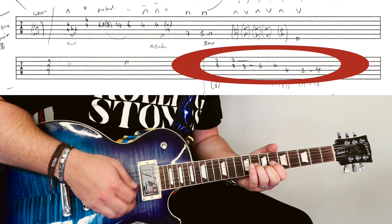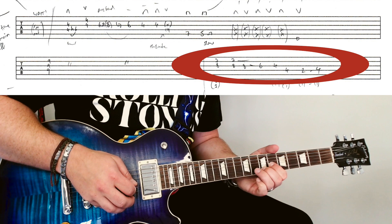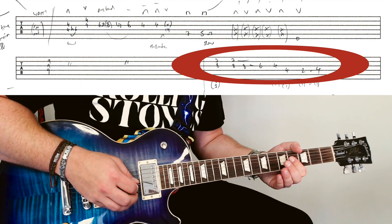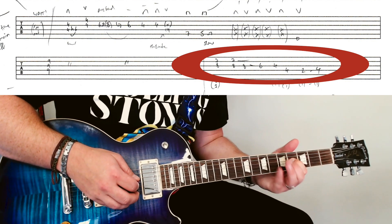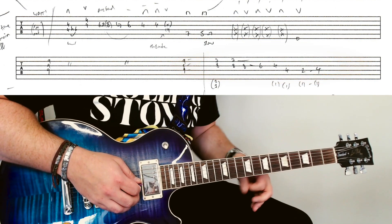You're going to play, leave this B string ringing, jump down to the fourth. A lot of first finger movement there, but that's the only way you can really make that happen.